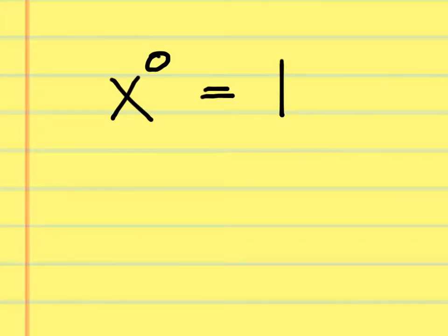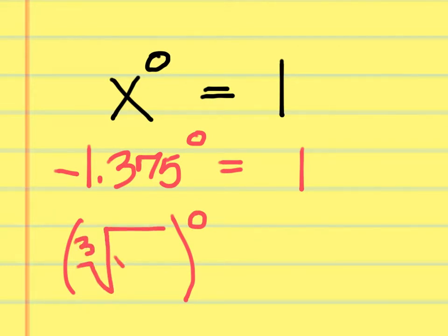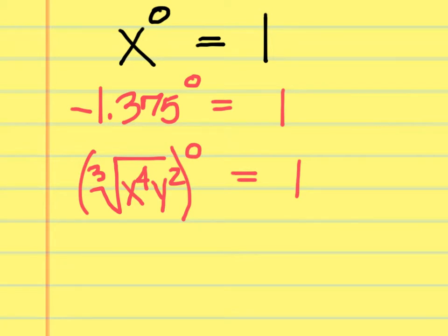Rule 4: anything to the zero power equals one — not zero. If you had negative 1.375 to the zero power, the answer is one. Even a complex expression like the quantity (third root of x to the fourth, y to the second) to the zero power is still one. The most common mistake is thinking the answer is zero.